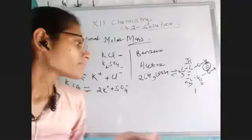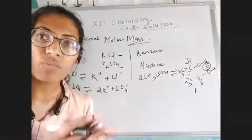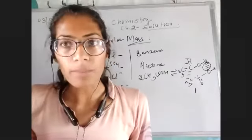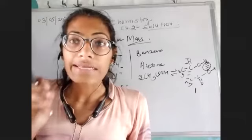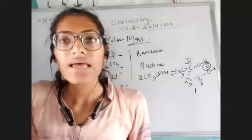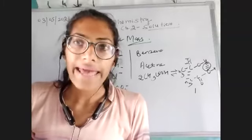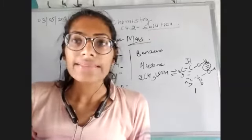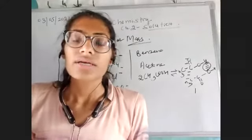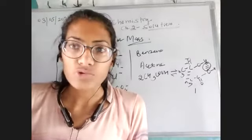From these examples, what comes to our mind is that if we have some kind of molecules that can either associate or dissociate, their molecular mass would not be normal — it would be either higher or lower. This higher or lower molar mass is known as abnormal molar mass. The abnormal molar mass is defined as the increment or decrement in the normal molar mass of the solute particles in solution. The reason behind this is known as association or dissociation.